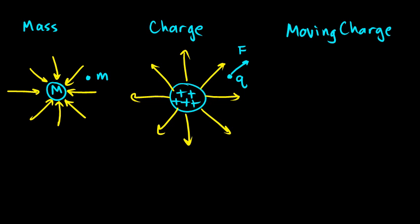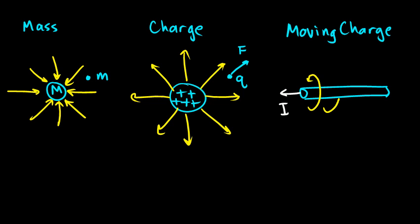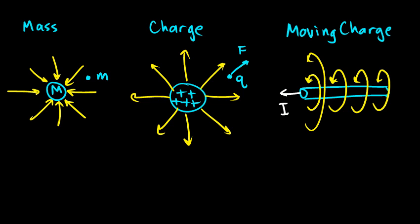So let's talk about the moving charge again. Here's a piece of wire, and let's imagine there's some current flowing through the wire — I is the symbol for current. There's a magnetic field around the wire, and the field lines are these circular loops around the wire, like that. There's a magnetic field around moving charge, and the electric current flowing through the wire is moving charge.